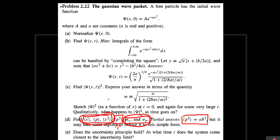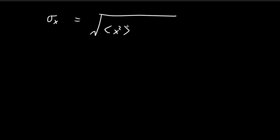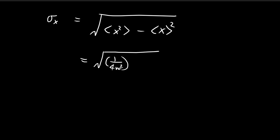At this point we have found the three required expressions, and we skip the expected value of p squared for the next video. The standard deviation of x equals the square root of the expected value of x squared minus the expected value of x squared. We found the expected value of x squared equals 1 over 4w squared and the expected value of x equals zero, so the standard deviation of x equals 1 divided by 2w.